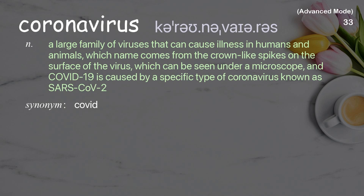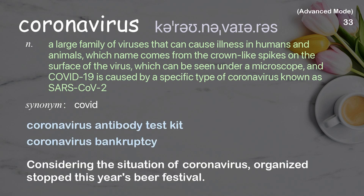Coronavirus: a large family of viruses that can cause illness in humans and animals. The name comes from the crown-like spikes on the surface of the virus, which can be seen under a microscope. COVID-19 is caused by a specific type of coronavirus known as SARS-CoV-2. Examples: coronavirus antibody test kit, coronavirus bankruptcy. Considering the situation of coronavirus, organizers stopped this year's beer festival.